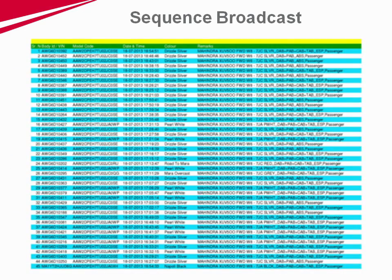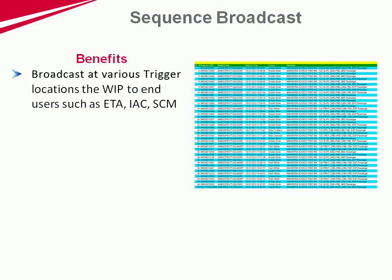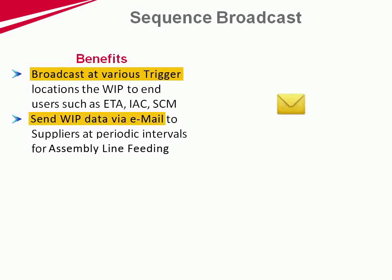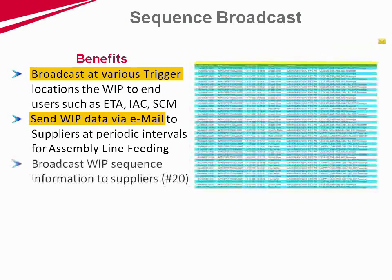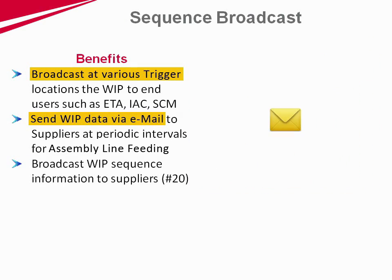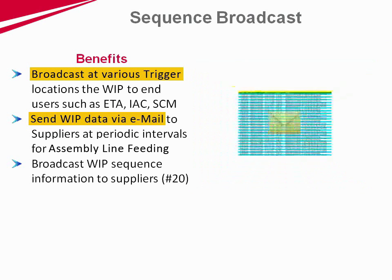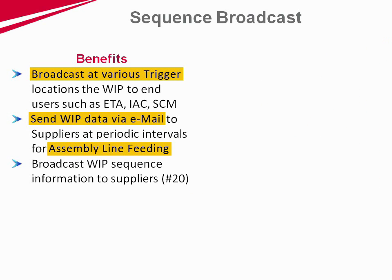One of the most powerful functions of MES is WIP sequence broadcasting at multiple trigger points and locations. MES will automatically send the WIP data to internal customers and suppliers, in addition to displaying sequence in sub-assemblies for engine, transaxle shops, etc.